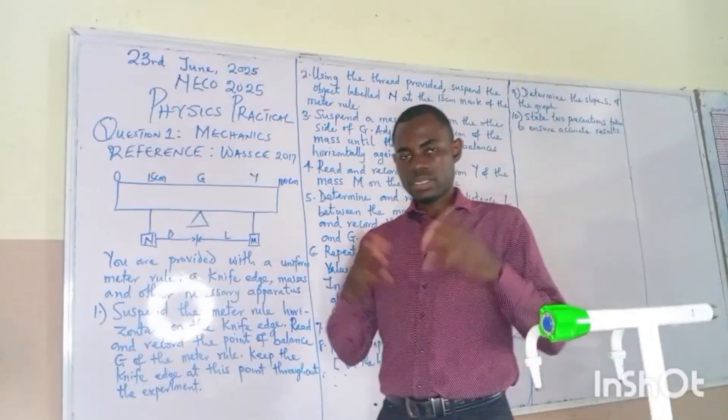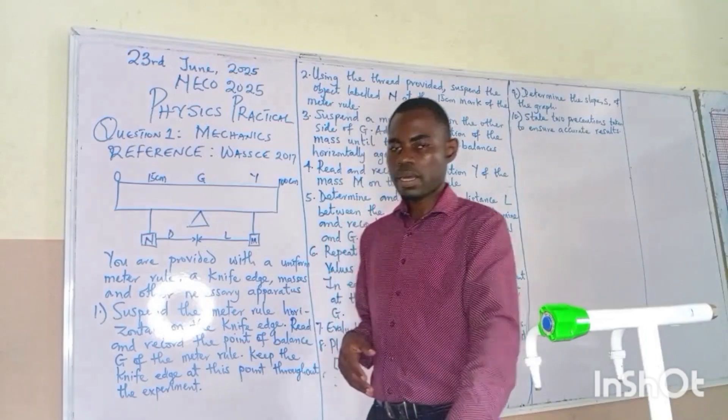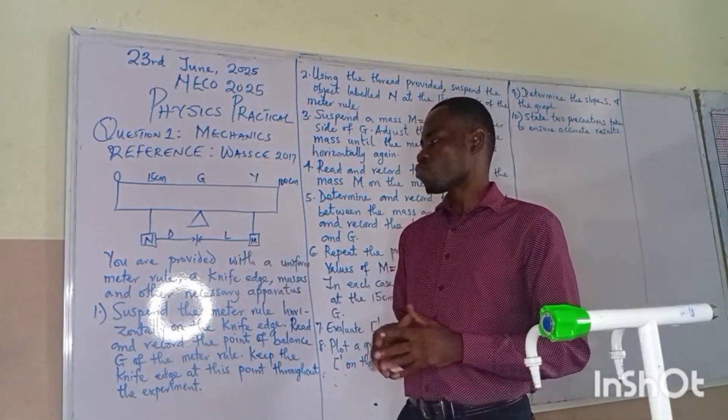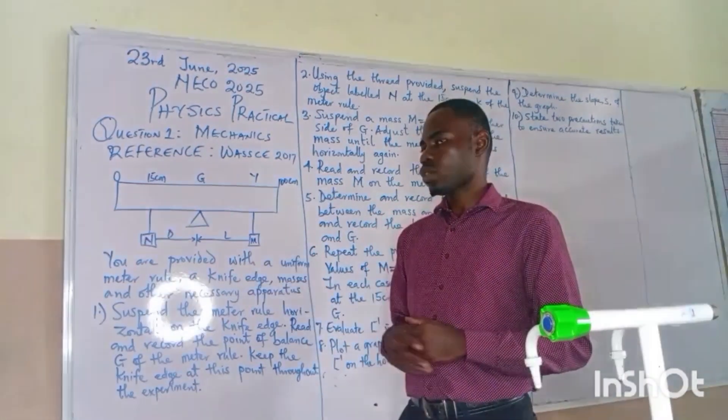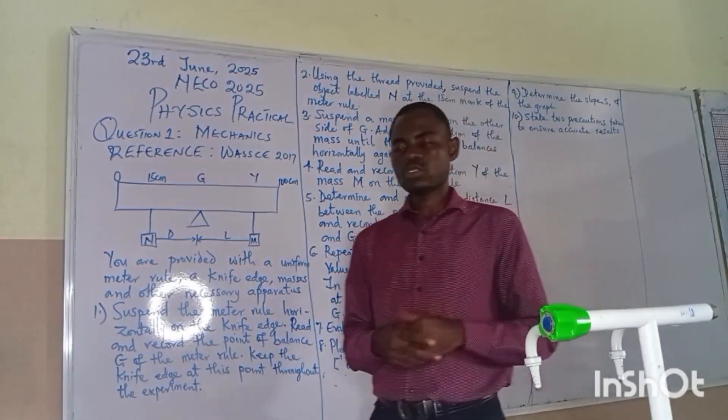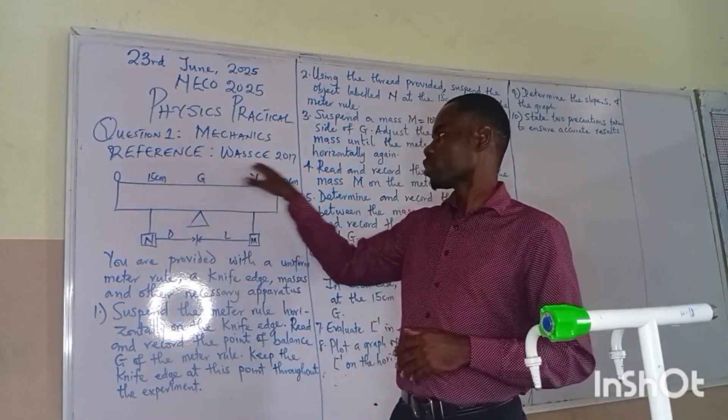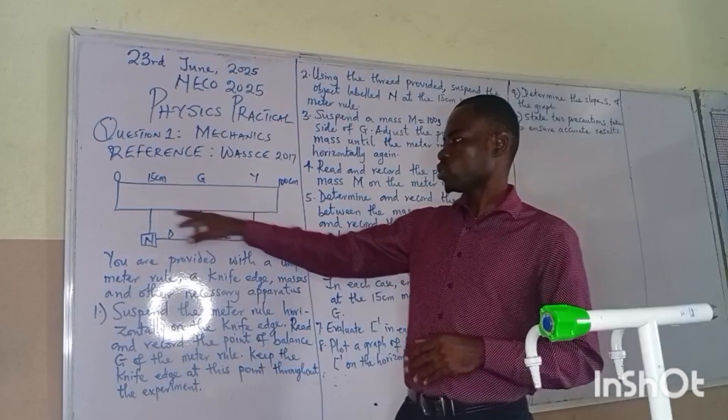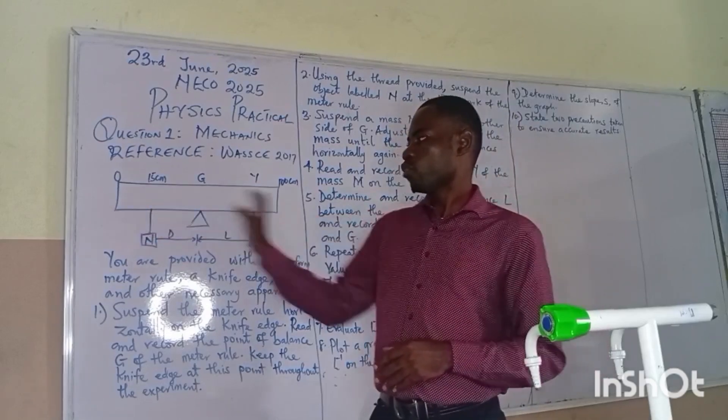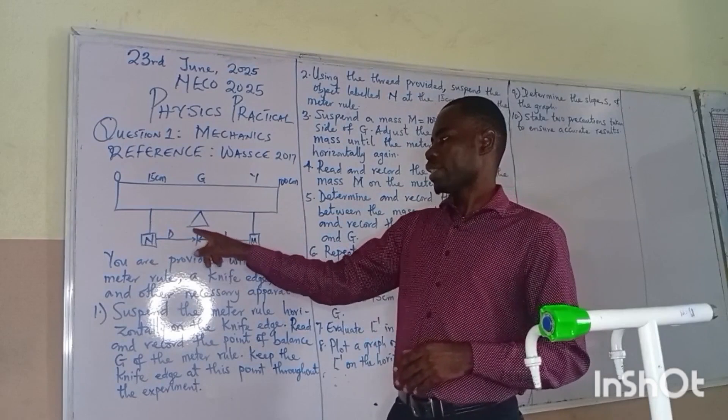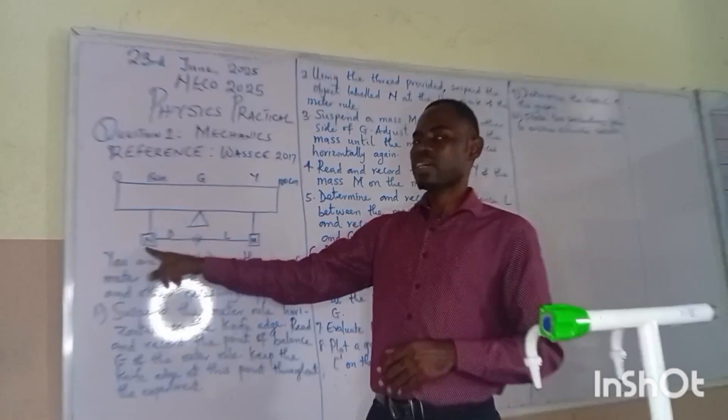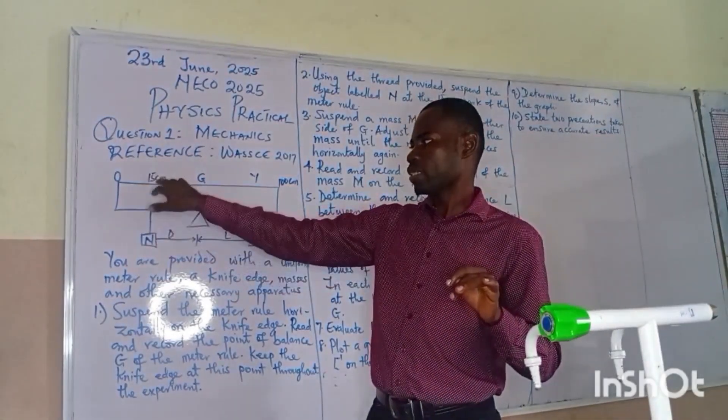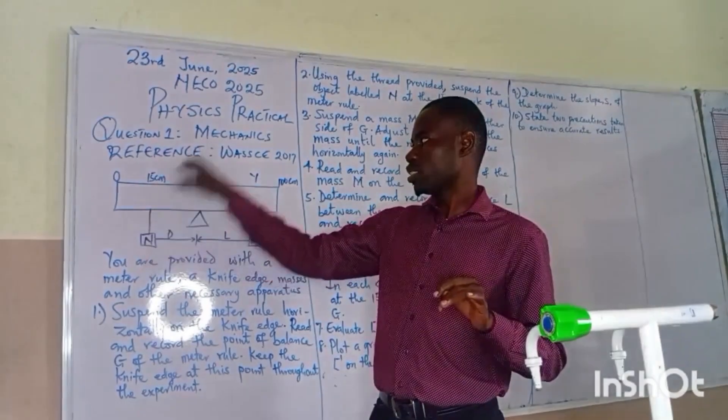With the given parameters, we are given the knife edge, the metal rule and the labs. So from there we are going to bring up a question related to that particular specimen and the apparatus mentioned. Now we are picking a reference from 2017 and now we have our diagram on this board. The diagram we are seeing is showing the metal rule of one breadth centimeter. And we have a center of gravity and we have a fixed mass N.